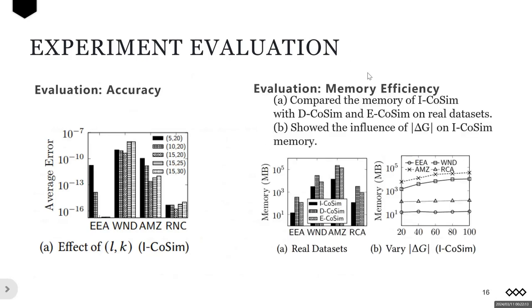Finally, we compare the memory of EcoSim with other CoSimRank algorithms. We notice that EcoSim yields up to 27 times less memory than D-CoSim.